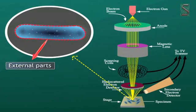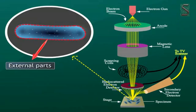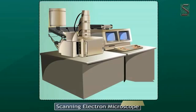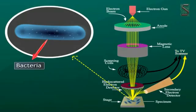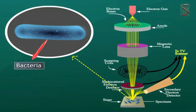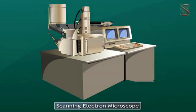The electrons interact with the atoms that make up the sample, producing signals that contain information about the sample's surface topography, composition and other properties such as electrical conductivity. The surface structure of microorganisms like bacteria can be observed through a scanning electron microscope.